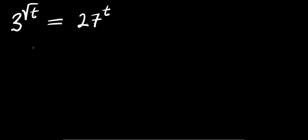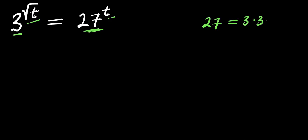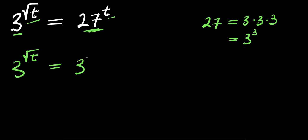Hello! How to solve this exponential problem and find all values of t that satisfy this equation: 3 to the power of root t equals 27 to the power of t. Now, 27 equals 3 times 3 times 3, that is 3 to the power of 3. So we have 3 power root t equals 3 power 3, raised to the power of t.